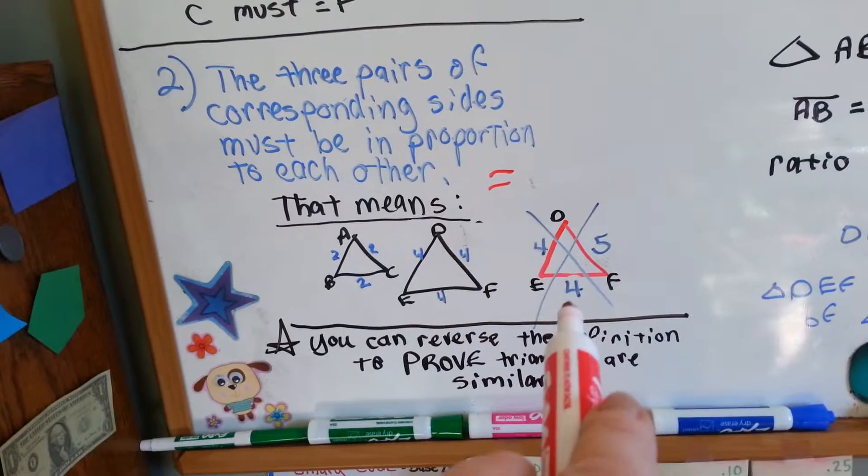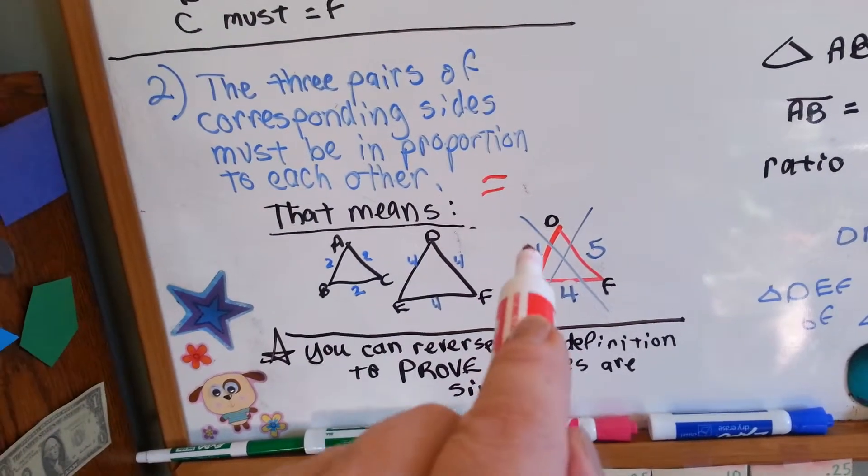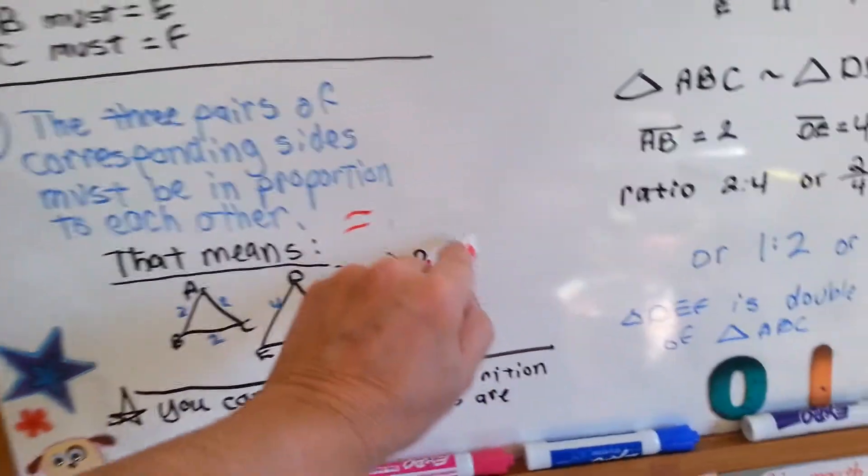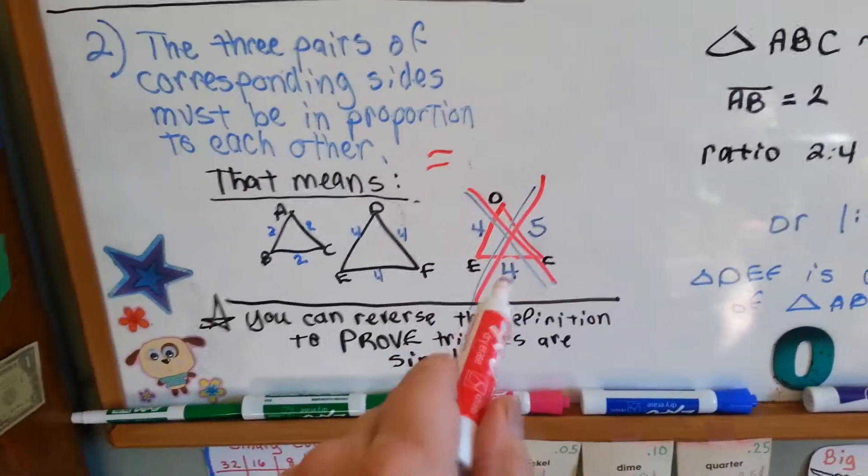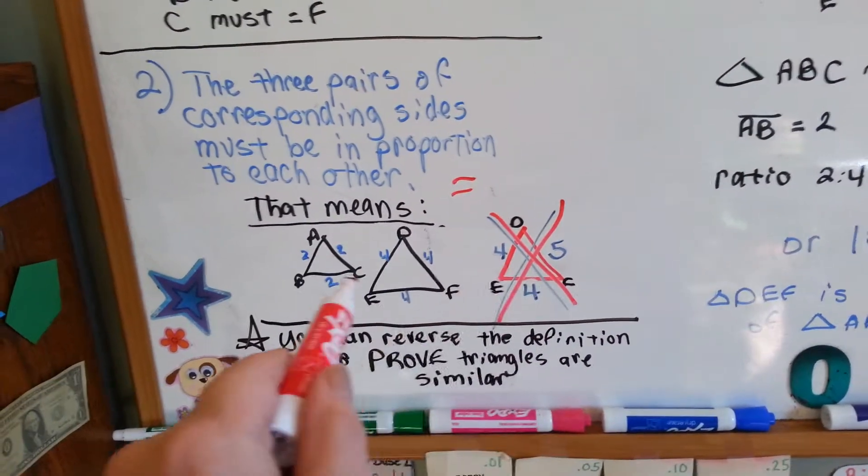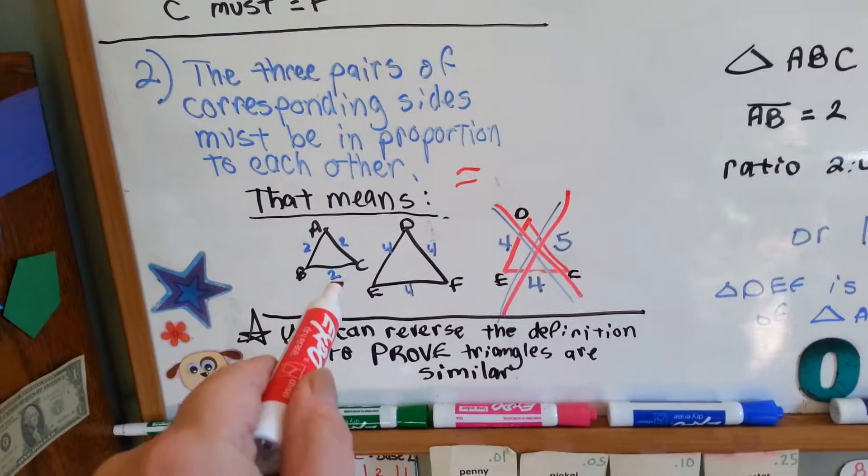Now, if you compare it to this triangle DEF, this one has a side of 4, 4, and this one's got a side of 5. So, no, this one is not similar.